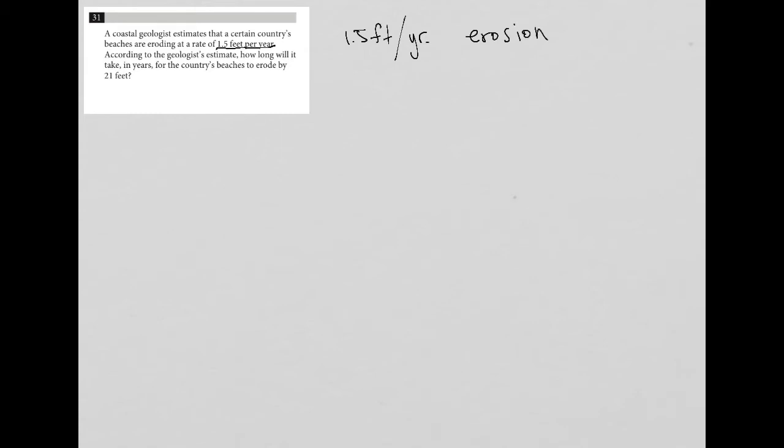So this question says: a coastal geologist estimates that a certain country's beaches are eroding at a rate of 1.5 feet per year. I'm going to write that down — 1.5 feet per year erosion. According to the geologist's estimate, how long will it take in years for the country's beaches to erode by 21 feet?